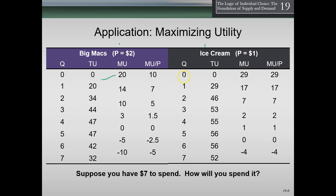For ice cream, buying one unit gives us a total utility of 29, so marginal utility is 29. They cost $1, so marginal utility per dollar is 29. If we go to two Big Macs, total utility goes up to 34; 34 minus 20 is 14 marginal utility, divided by $2 gives us 7. Two ice creams gives a total utility of 46; 46 minus 29 is 17 marginal utility, divided by $1 gives 17.